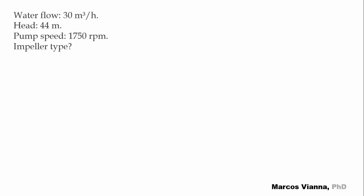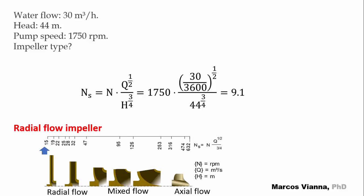Here's an example. Consider the case in which the water flow is 30 cubic meters per hour, the head is 44 meters, and the pump speed is 1750 RPM. What will be the impeller type? Here is the specific speed formula. We substitute the values and find 9.1. It's a radial flow impeller. This will be the case in almost all our practical applications.